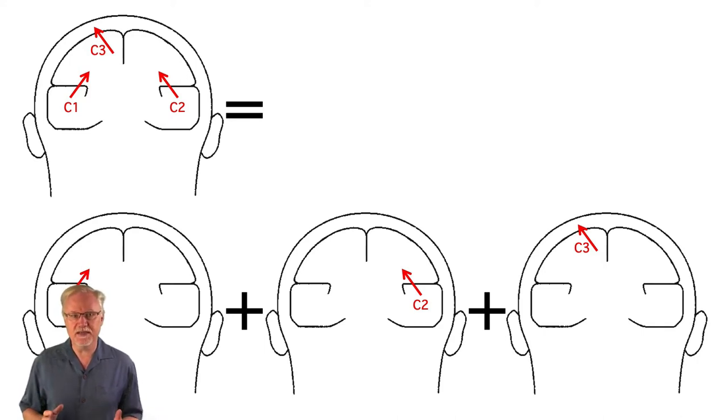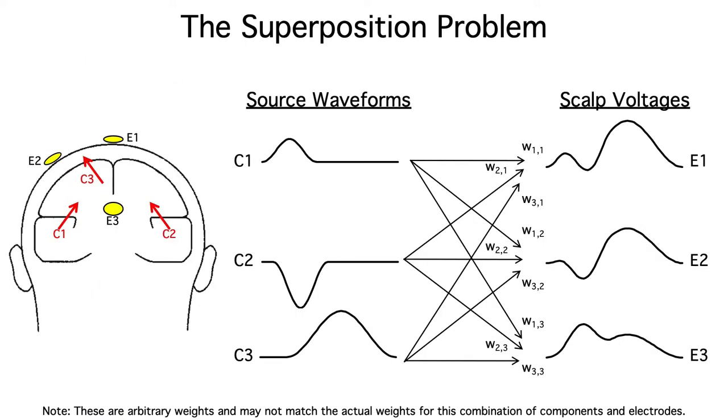So, the scalp signals we would get from these three generator sources when they're present simultaneously is equal to what we'd get by summing the signals for each source alone. As a result, the voltage at any given scalp electrode is simply a weighted sum of the underlying source waveforms.